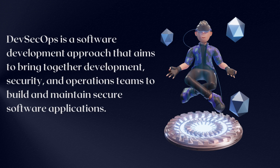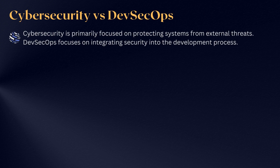There are some key terminologies we have to understand. One question you will surely have is: what is the difference between cybersecurity and DevSecOps? Cybersecurity is primarily focused on protecting the system from external threats, whereas DevSecOps focuses on integrating security into the development process. In cybersecurity, penetration testing and white hat or red hat topics come into picture, whereas in DevSecOps, we focus on the software development life cycle and where we can introduce security into it.